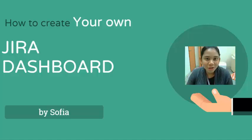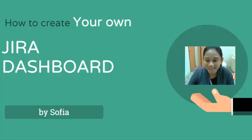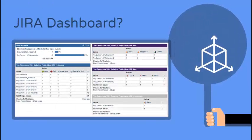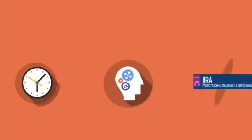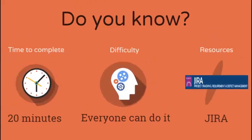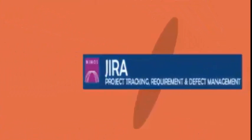Hi everyone, join me and I will show you how to create your own Jira Dashboard. A Jira Dashboard is used to keep track of information and watch other tasks as they are completed. It looks like this. It only takes around 30 minutes to create your own Dashboard, and everyone can do it. Let's start our own Dashboard via this Jira link.